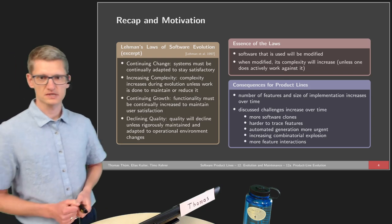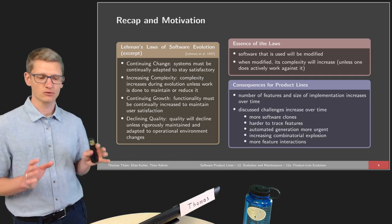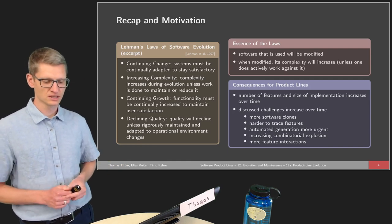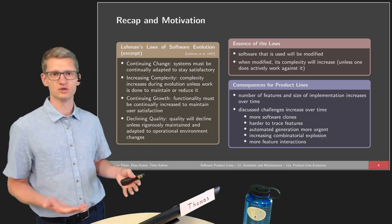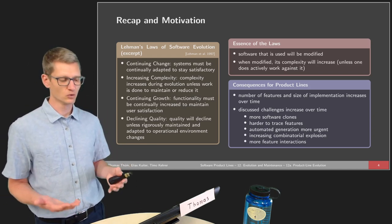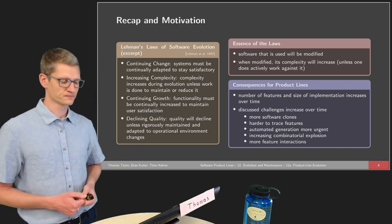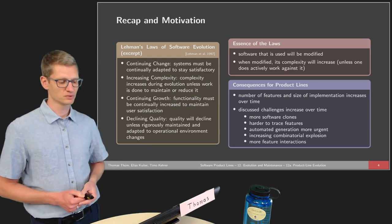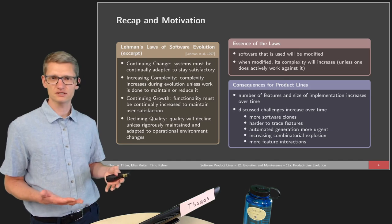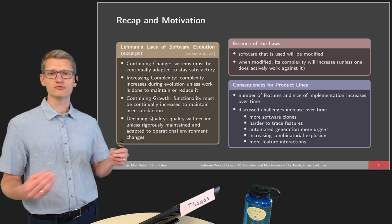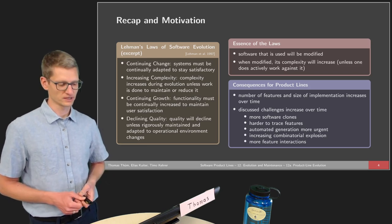We already talked about Lehman's laws of software evolution in the introductory course. The essence of these laws is that software that is used will be modified — there's no way around this. If software is used for a certain amount of time, it will need to be modified. And when modified, its complexity will increase automatically. If we don't want it to increase, we need to actively work against it.